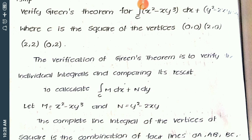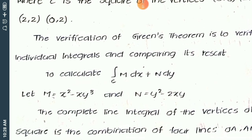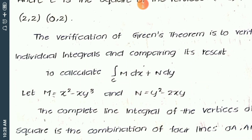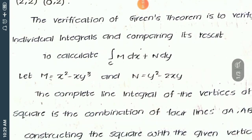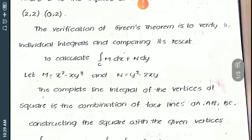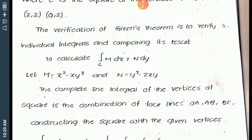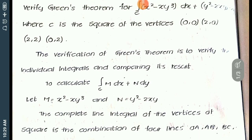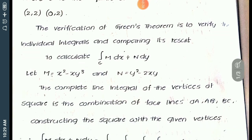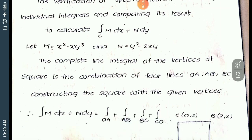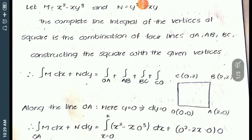Identify M = x² − xy³ and N = y² − 2xy. In order to calculate the complete integral over the vertices of the given square, as we did in the line integral type, you construct a square corresponding to the given vertices.